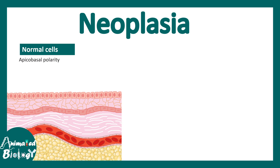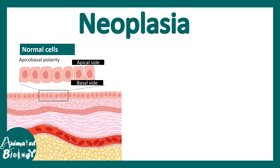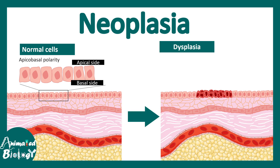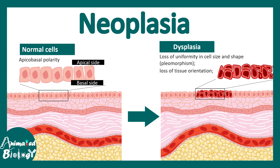This is how a normal portion of tissue looks. Every epithelial cell would have an apico-basal polarity — there would be an apical side and a basal side. Neoplasia is a stepwise process; the pathology develops in stages. The first step is cell shape transitions, known as dysplasia. You can see there is a portion of cells which has taken different shapes and orientation, and their apico-basal polarity is compromised.